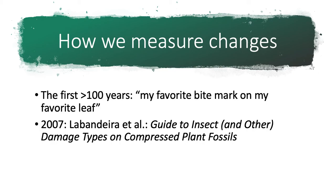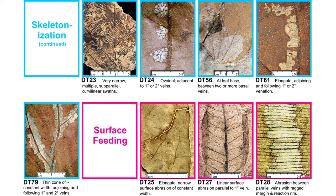Then a little more than 10 years ago, the lovingly named Guide to Insect and Other Damage Types on Compressed Plant Fossils was published. There are hundreds of unique numbers, one for each particular type of damage that insects can cause on a leaf that can then be preserved in the fossil record. These hundreds of numbers provide a framework that allows us to quantify how the diversity of insect feeding damage on plants has changed in deep time.